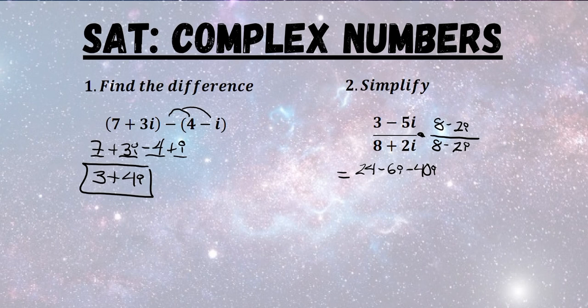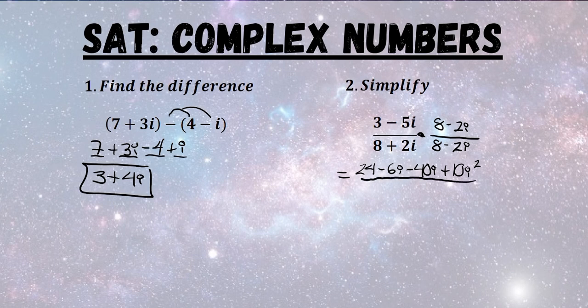Negative 5i times negative 2i is going to be plus 10i squared. And we're going to divide this by FOILing the bottom.